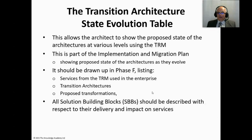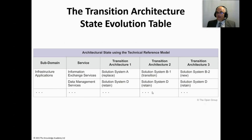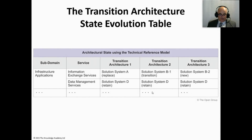The architecture state evolution table is part of the implementation migration plan itself, showing the proposed state of the architectures as they evolve. Drawn up in Phase F, it lists transition architectures and proposed transformations. All solution building blocks should be described with respect to their delivery and impact on services. Any reference to the technical reference model in this artifact can be ignored, as it has been removed from the TOGAF standard itself.